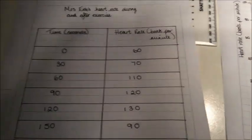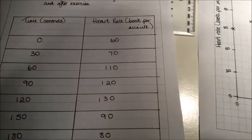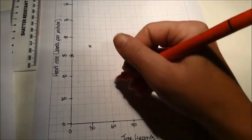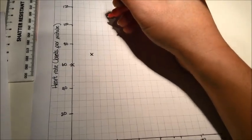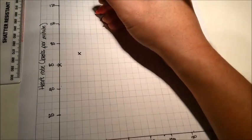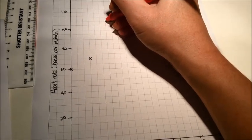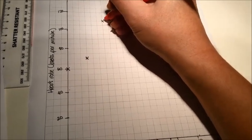So let's go for our 60. 60 seconds, our heart rate was 110. There's 60, and we have to go all the way up to 110, which is in between 100 and 120. There we go.